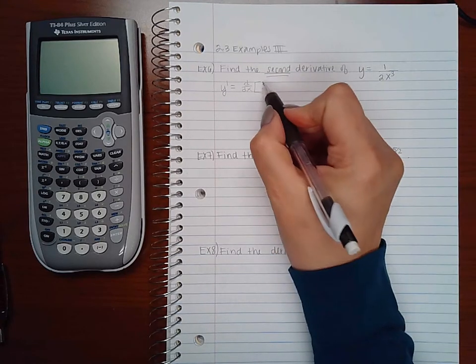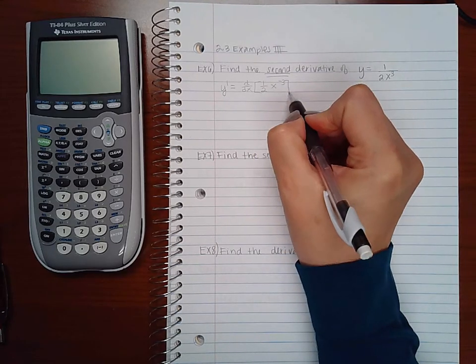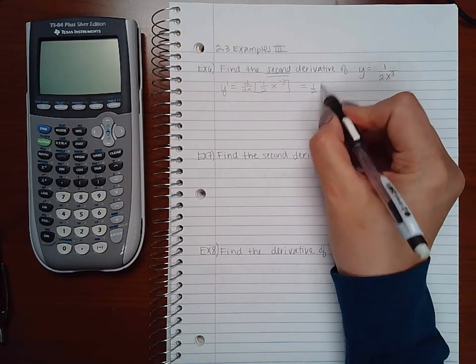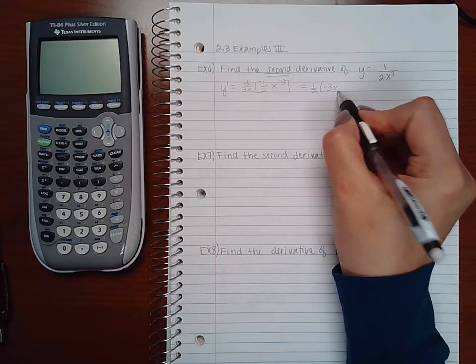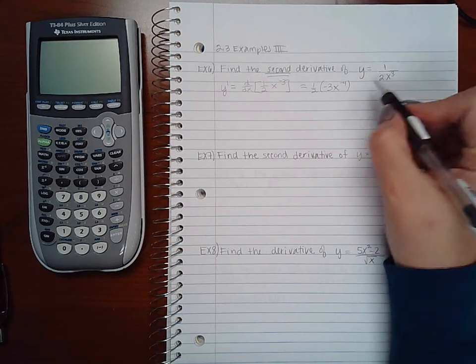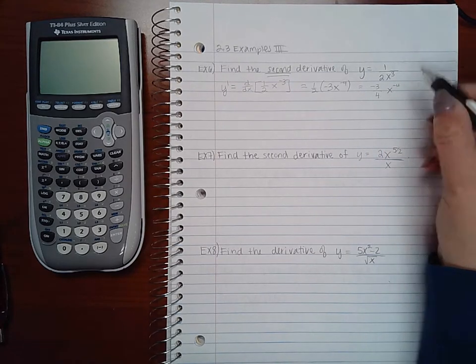So I'm going to rewrite it as 1 half times x to the negative 3. And now I'll actually take the derivative. So 1 half, bring down my power, decrease the power by 1. And if I simplify that, I get negative 3 fourths x to the negative 4.